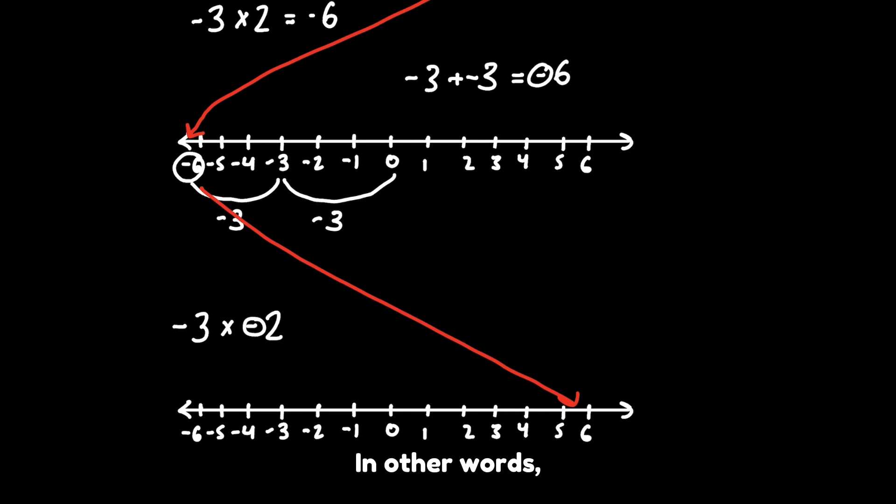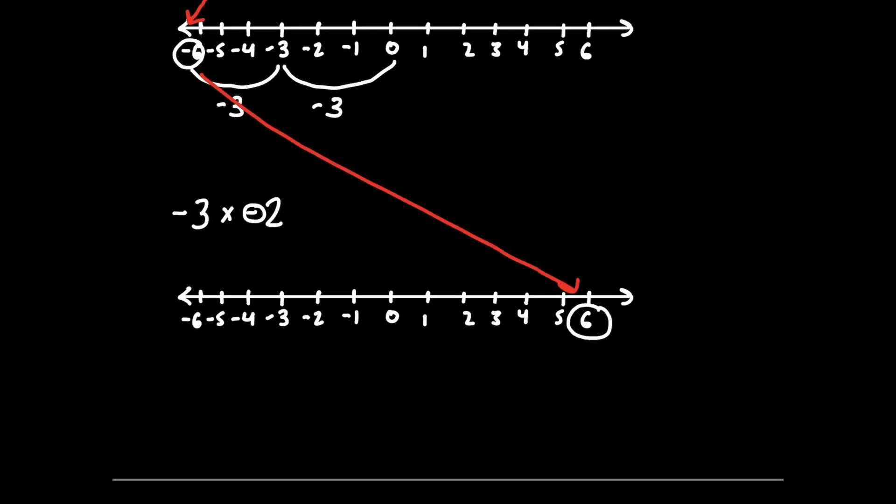In other words, when the answer goes back to the right, we can see that it is positive. This is why a negative times negative equals a positive.